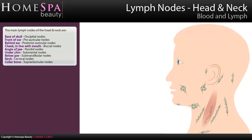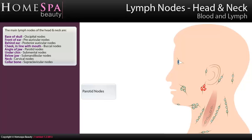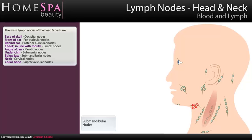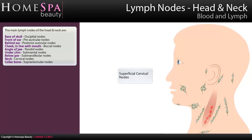Lymph nodes of the head and neck. The main lymph nodes of the head and neck are: base of skull — occipital nodes; front of ear — preauricular nodes; behind ear — posterior auricular nodes; cheek in line with mouth — buccal nodes; angle of jaw — parotid nodes; under chin — submental nodes; below jaw — submandibular nodes; collarbone — supraclavicular nodes; neck — cervical nodes.